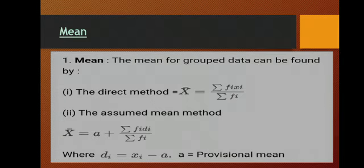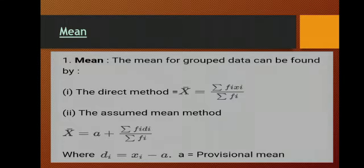Let us recall how to find the mean. The mean of grouped data can be found by the direct method, where we take the multiplication of the mid-value and the frequencies upon the total number of frequencies. And in the assumed mean method, we assume a provisional mean and using the given formula, we find the mean. This you have already studied in your 10th class.